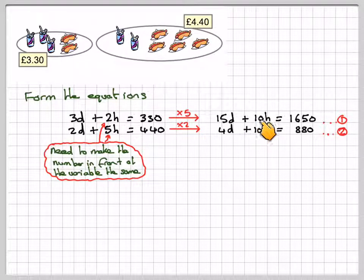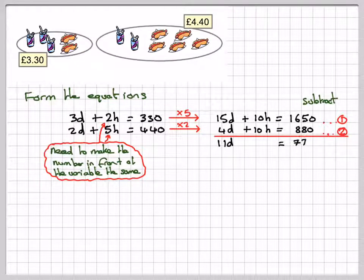Now we can see that these two are the same. So if we were to subtract, we're going to get 15 minus 4, which is 11D, 1650 minus 880, which is 770. Dividing through by 11, we're going to get that D is equal to 70.